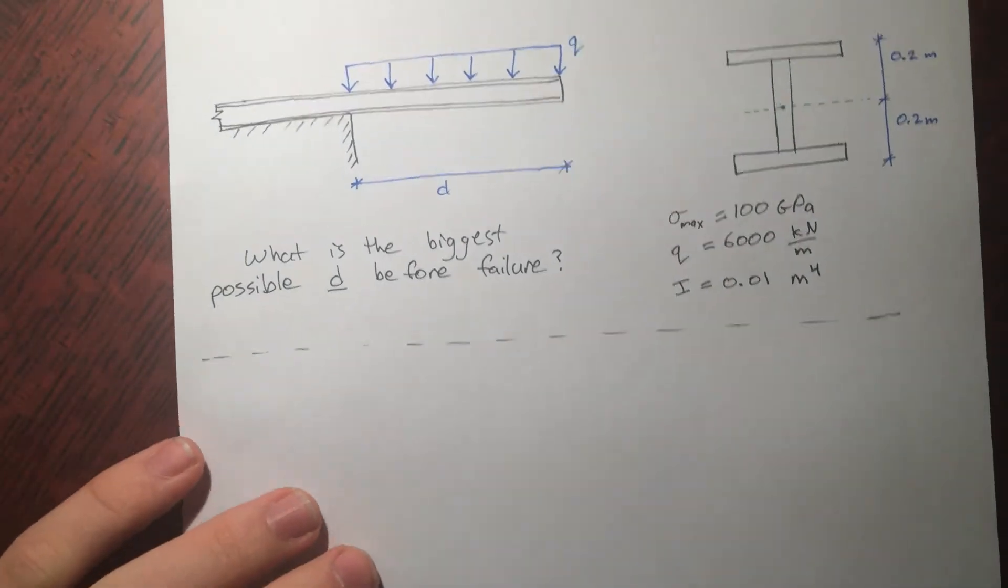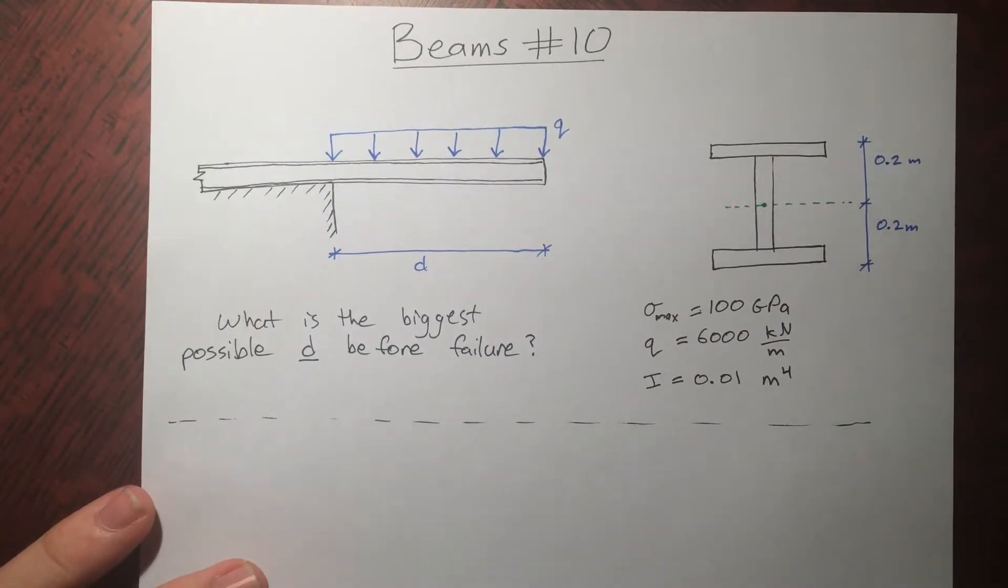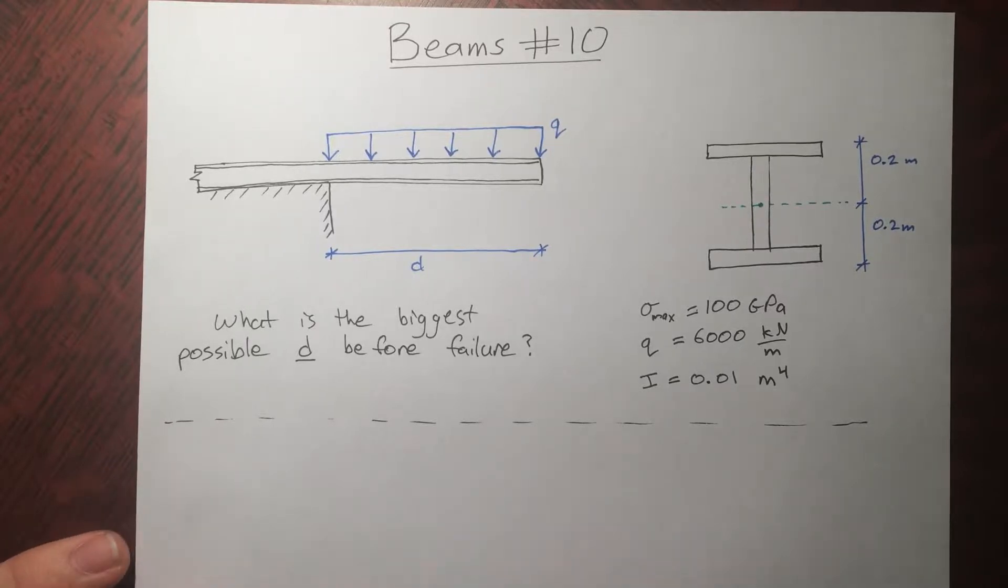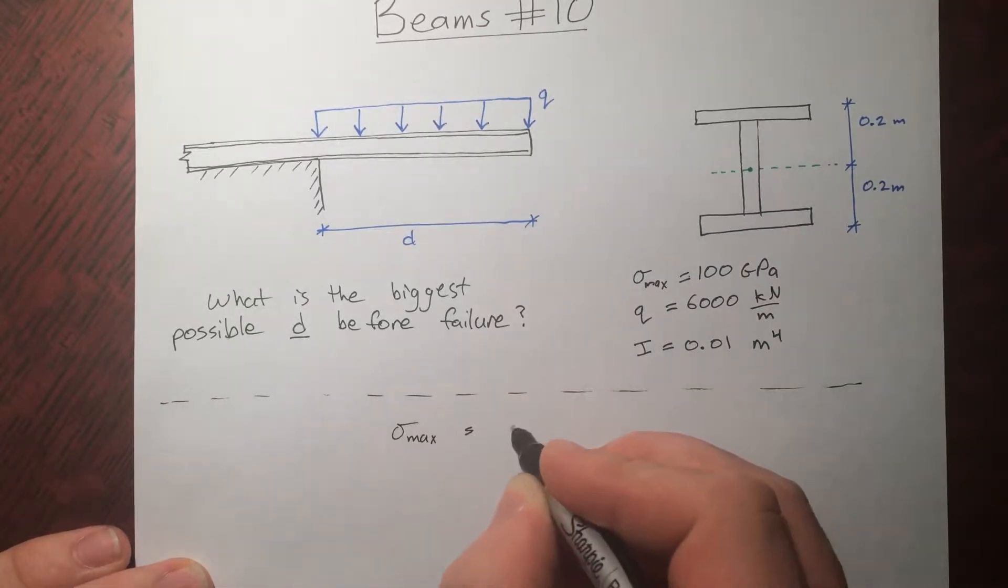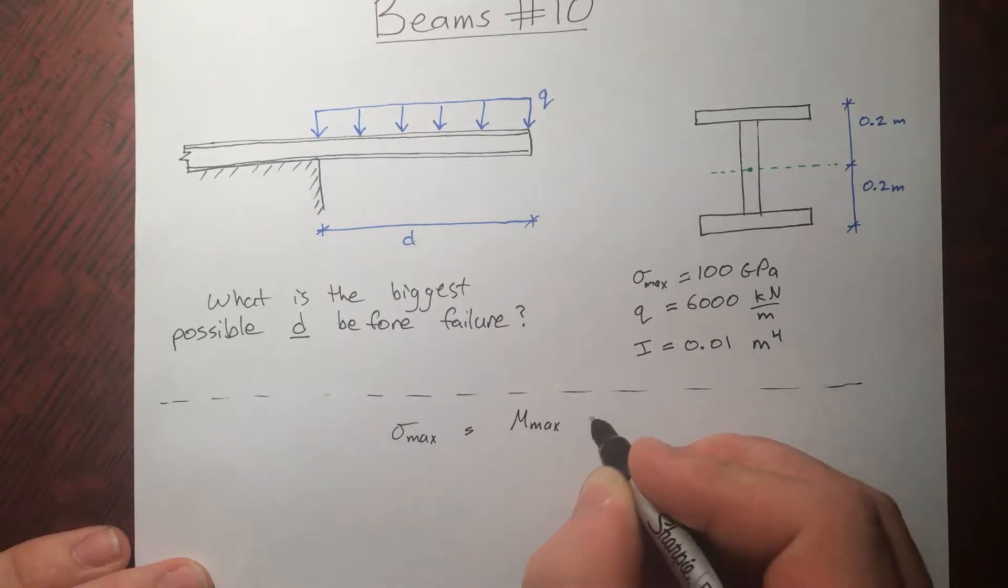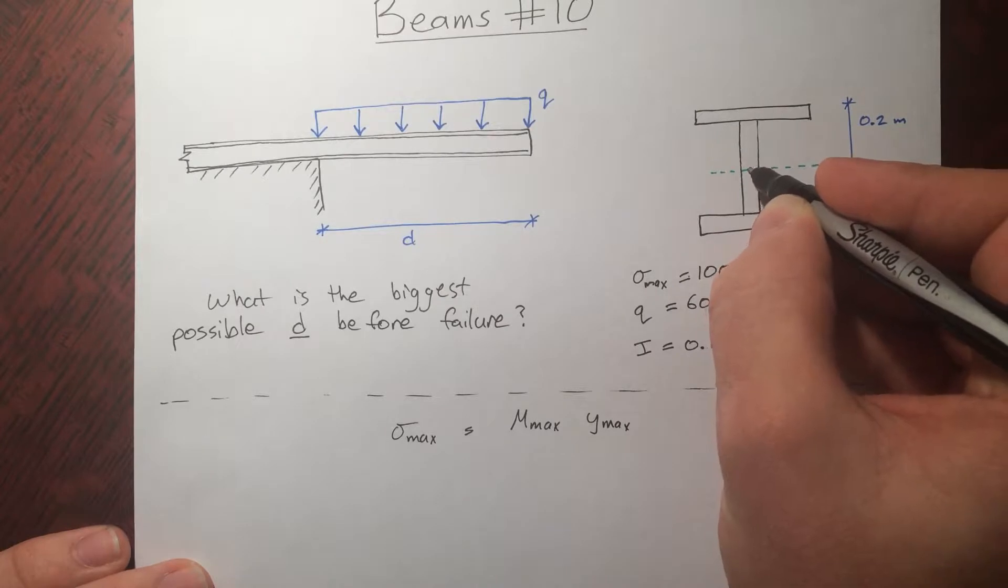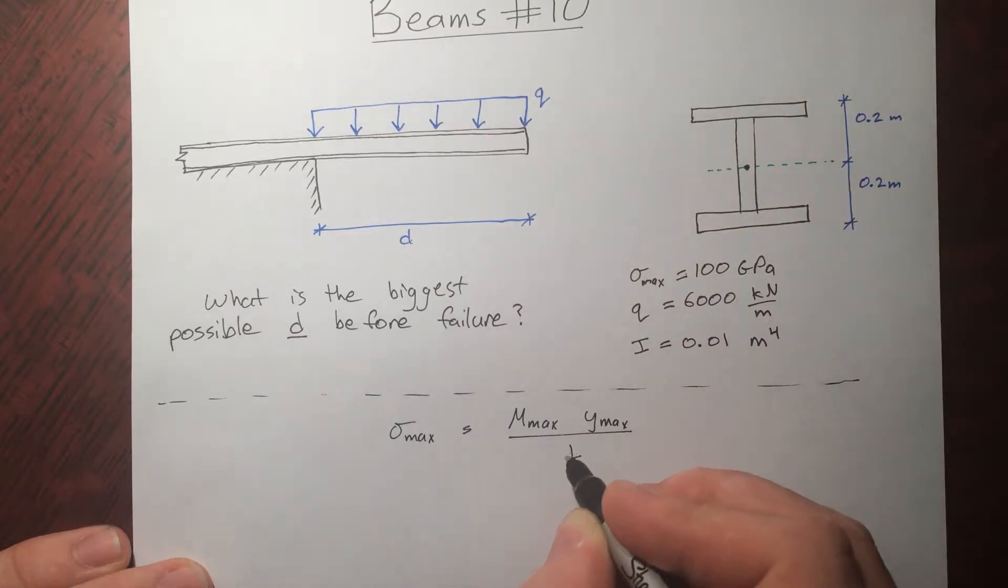How big of a distance can we possibly jack this out? So this is totally a calculation somebody would do. We know that stress max occurs when we have the maximum bending moment, the greatest distance away from the neutral axis, in our case it's going to be right there, over I, which was handily given to us here.